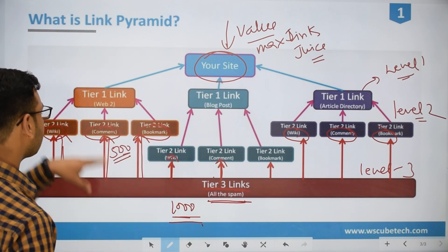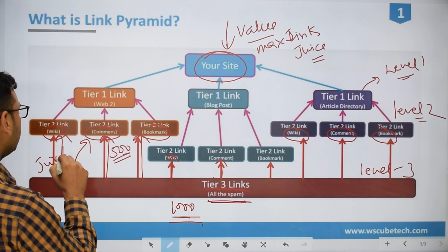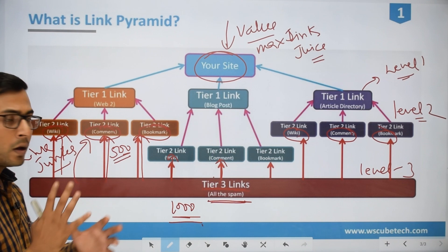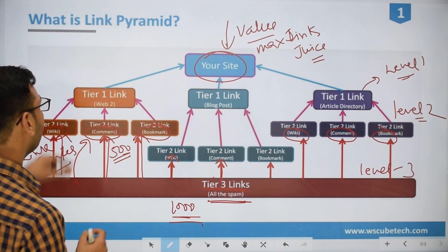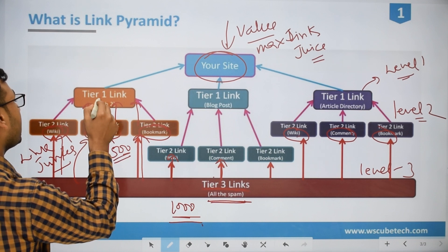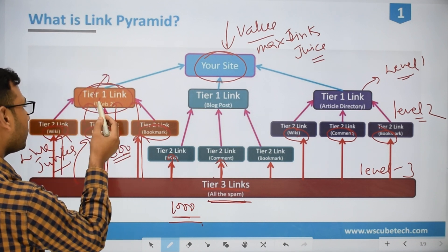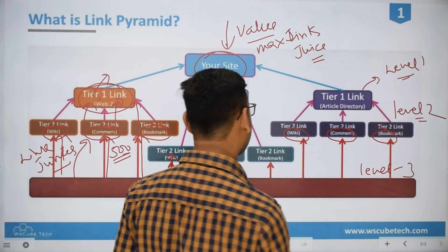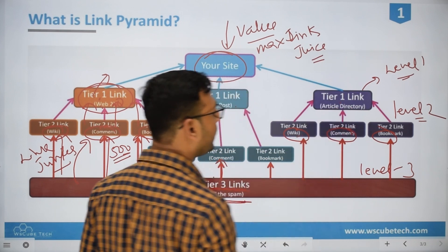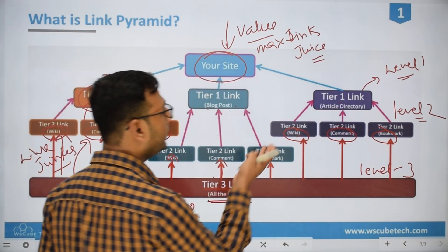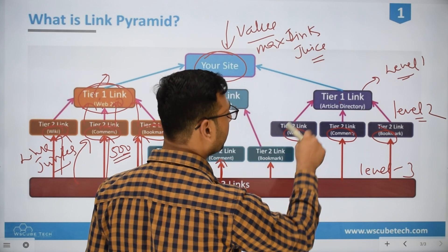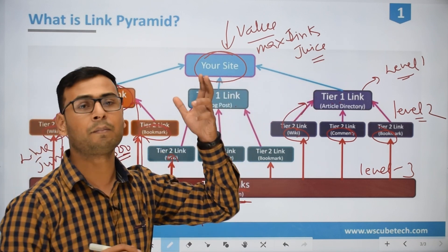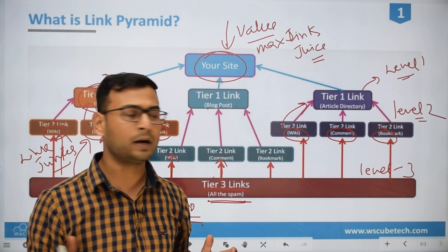The tier 3 links have passed some value — some link juice — over to tier 2, so the tier 2 links are now having some good value. These tier 2 links will now be linking to tier 1 links, and tier 1 links are very good links — very good content. This is web 2.0 content, a very good and unique blog post, a very unique kind of article. When we link tier 2 content to tier 1, it again passes some value to tier 1 content. Tier 1 is premium content, unique content, and SEO friendly content.